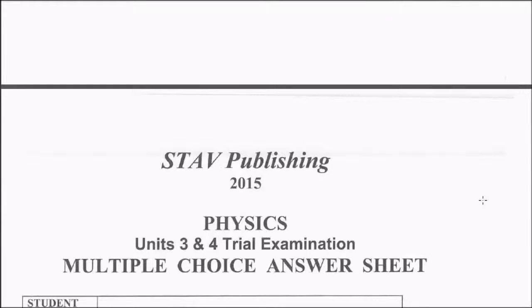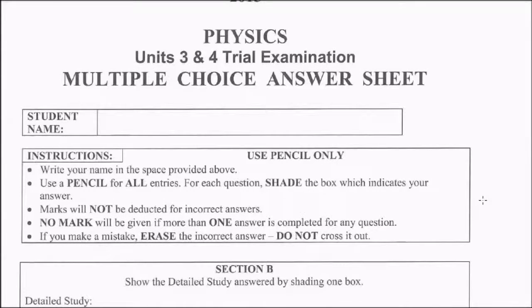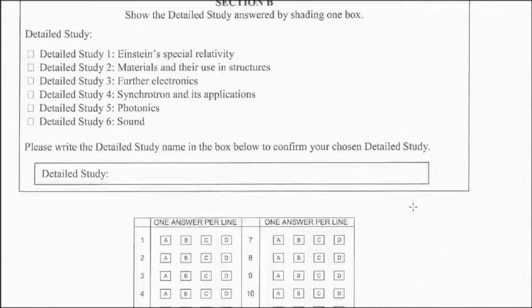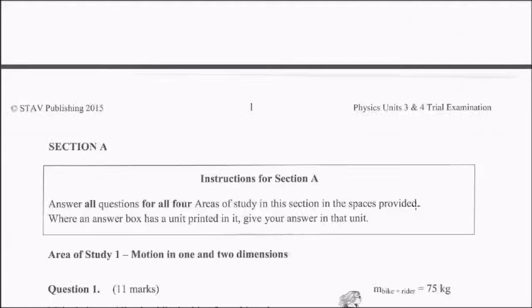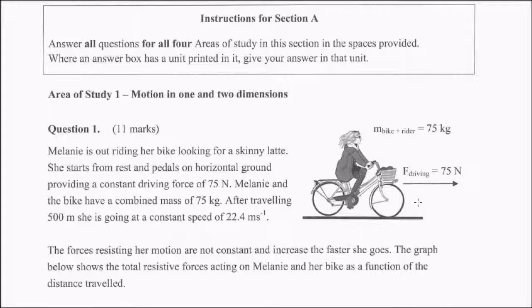Okay, so moving down into the motion section now. I thought this was a fairly inconsistent exam. Some parts of it I thought were quite hard, and some parts I thought were quite easy. When we go down to the motion section, I thought that was actually fairly difficult. So the first question, Melanie is out riding her bike. She starts from rest.